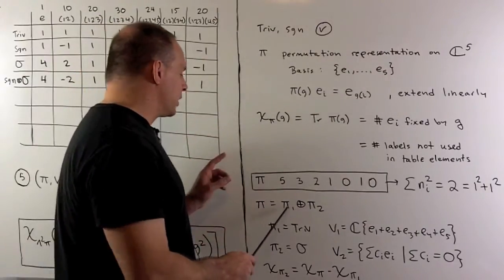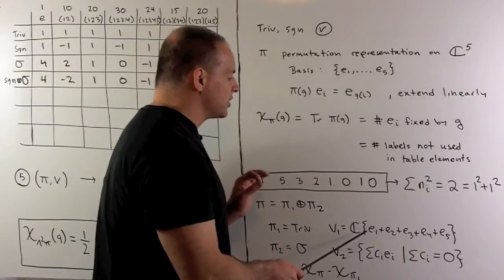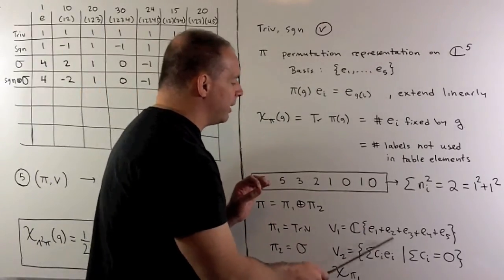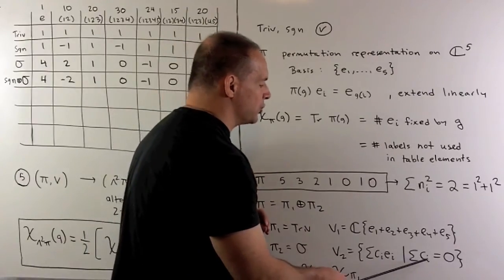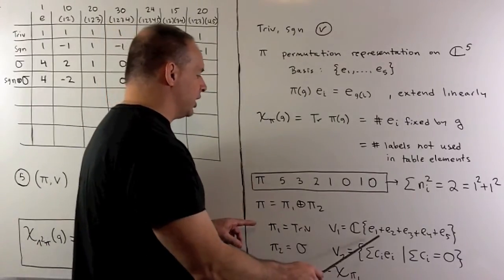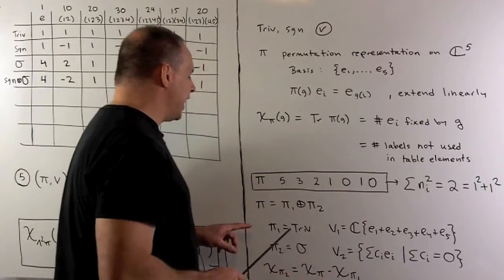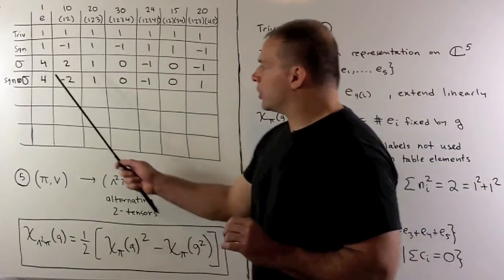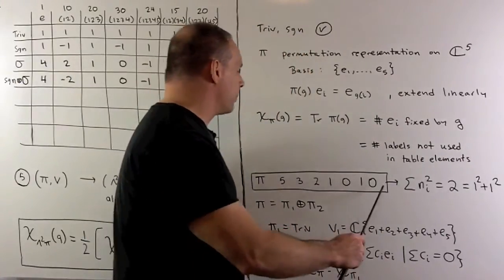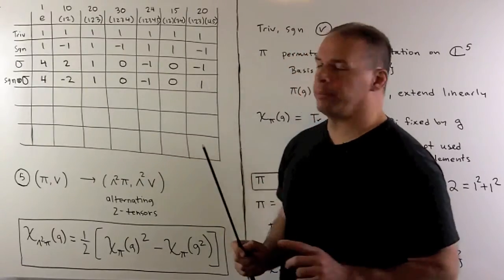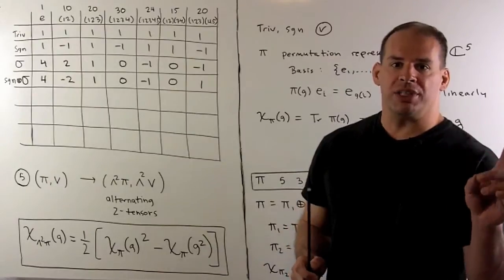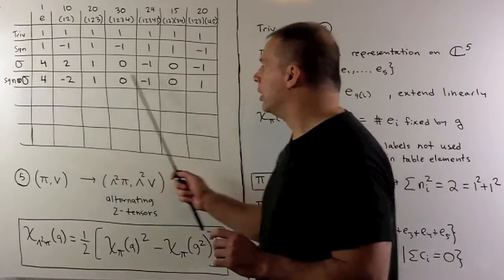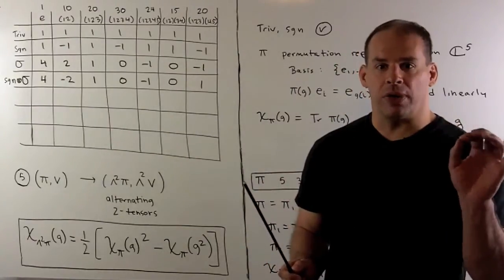Proceeding as we did with S4, one of these components is going to be trivial — just the span of the sum of the basis vectors. For the other piece, we're taking linear combinations in our basis elements such that the sums of the coefficients equal 0. Because we have a trivial representation, the character of this piece is obtained by taking the character of pi and subtracting off all 1s. So the character for sigma is: 4, 2, 1, 0, −1, 0, −1. For another representation, we multiply by the sign representation and see if we get something new — in this case, we do. You should verify your orthogonality relations at this stage.